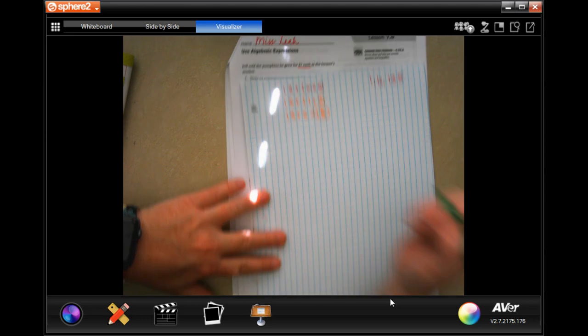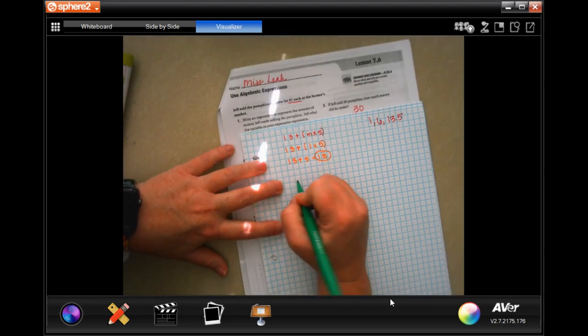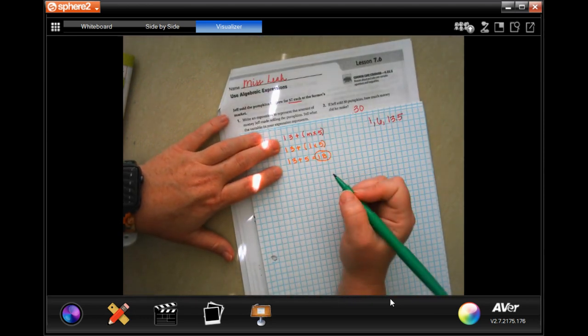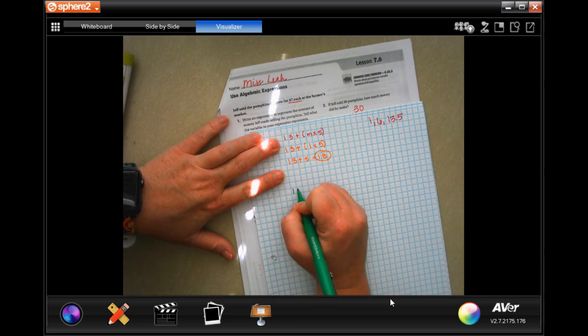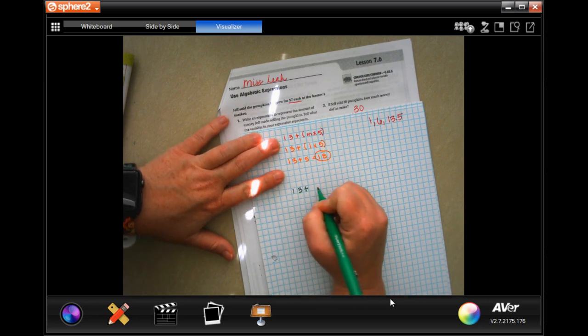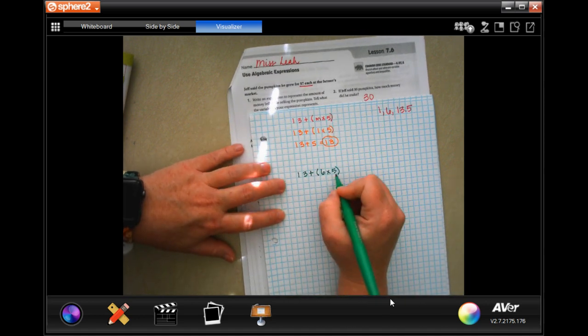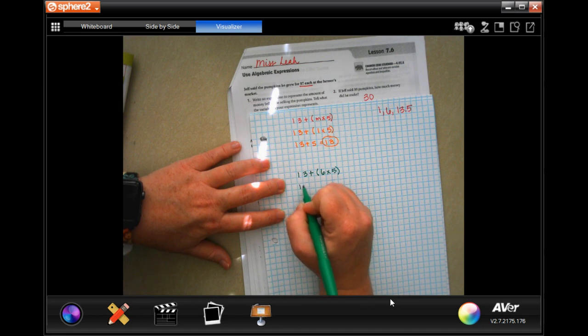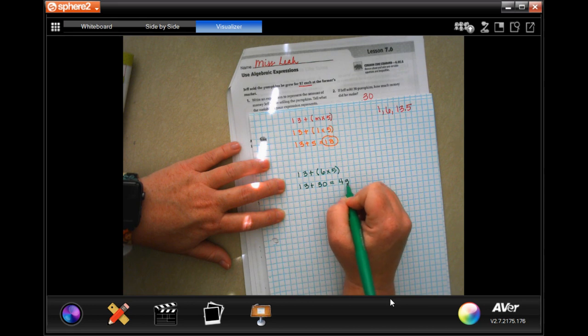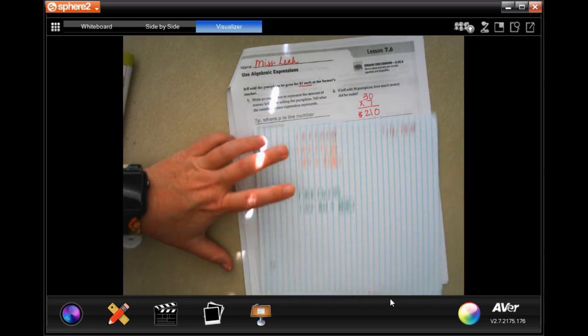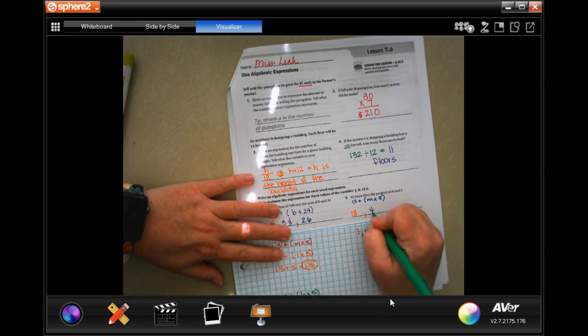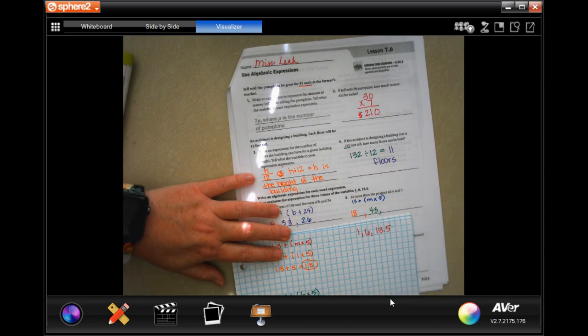All right, we're still going to have the same formula, but I'm going to fill in 6 this time for M. So, now I'm going to have 13 plus 6 times 5, boom. Well, 6 times 5 is 30, so now I have 13 plus 30, which is 43. Your next one, 43.